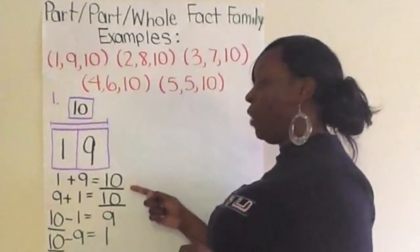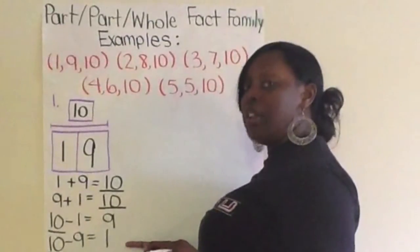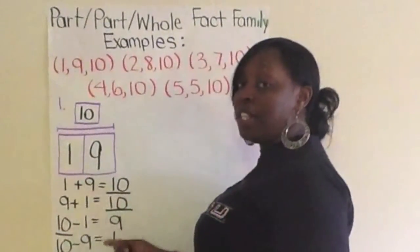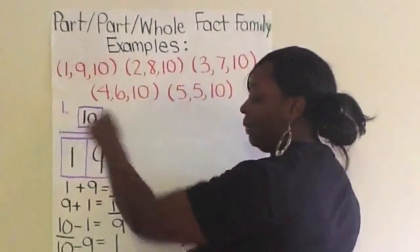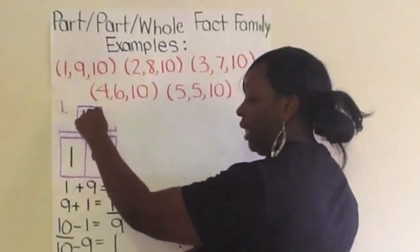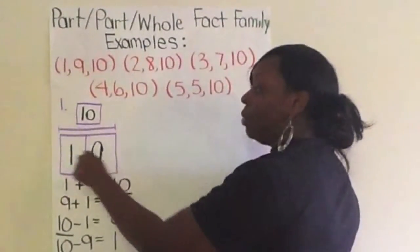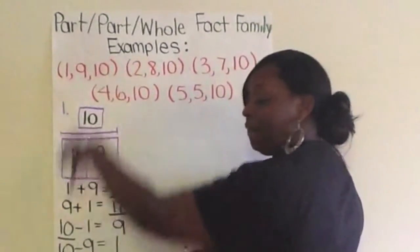So, these are the four related fact family problems. They are family because they're all related because we're using all the same numbers. 1 plus 9 equals 10. 9 plus 1 equals 10. 10 minus 1 equals 9. 10 minus 9 equals 1. So, that would be one fact family.